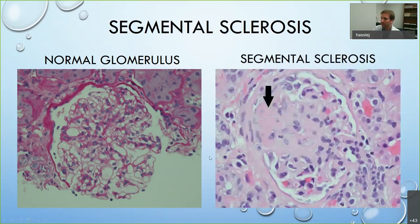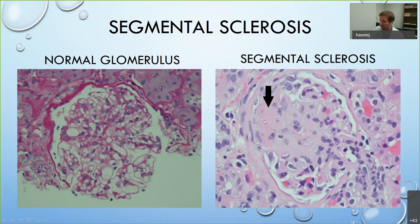The next feature is segmental sclerosis — where certain areas of the capillary tuft scar down and can even adhere to Bowman's capsule. You have somewhat normal appearance in one area and then the rest has scarred down, meaning that portion of the capillary tuft can't do its job of filtration. If I see this in at least one glomerulus, that patient gets an S1 score, meaning higher risk for needing dialysis in 10 years.